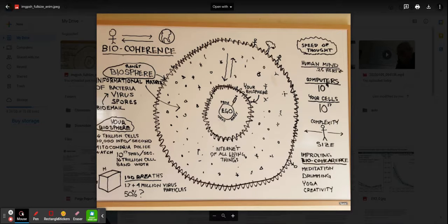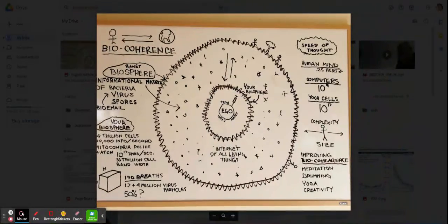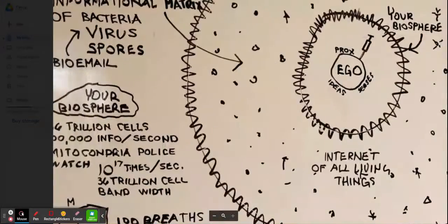Take a breath. Every hundred breaths, 1.7 to 4 million virus particles go into your body, 50% of which nobody can identify. That's a lot of particles. And what do they do? They communicate with the mitochondria police.